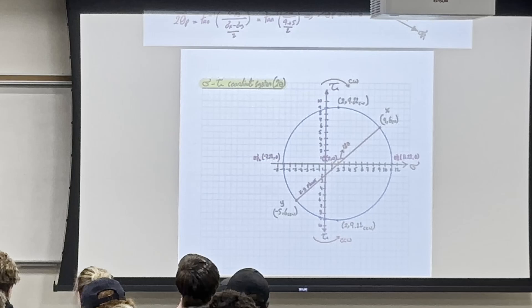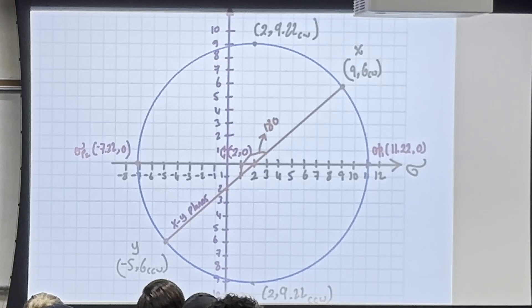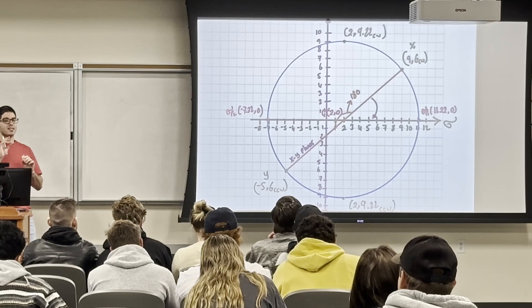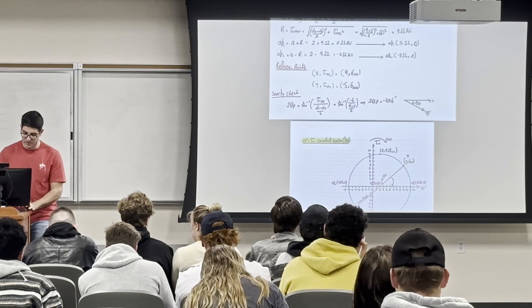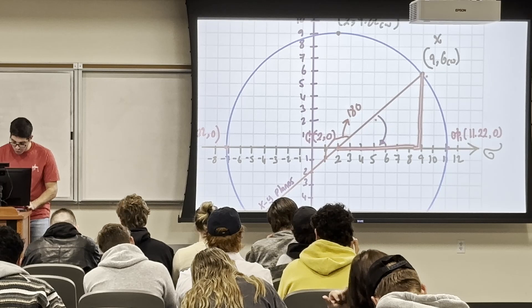For X: σ_x = −60 and the shear is 27 — clockwise or counterclockwise? Counterclockwise. For Y: σ_y = 12 and the shear is 27 clockwise. So X = (−60, 27 counterclockwise) and Y = (12, 27 clockwise). Here is the circle — let's draw the x and y points together.